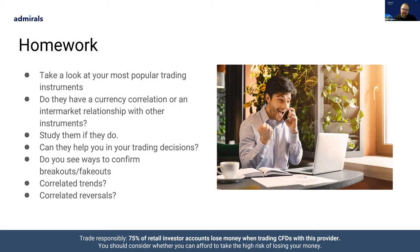As most importantly for us as traders: is there something in there that can help your trading decisions? Is there something you can add to your trading decision matrix? Do you see ways to confirm breakouts or fakeouts in your trading if there are correlations or intermarket relationships? Are there correlated trends, or even correlated reversals? Sometimes you'll see, especially across a particular currency pair, correlated trends building up, or elements that give you an idea that a particular currency's trend is coming to an end and looking to change — and that can be ultimately very beneficial for you.